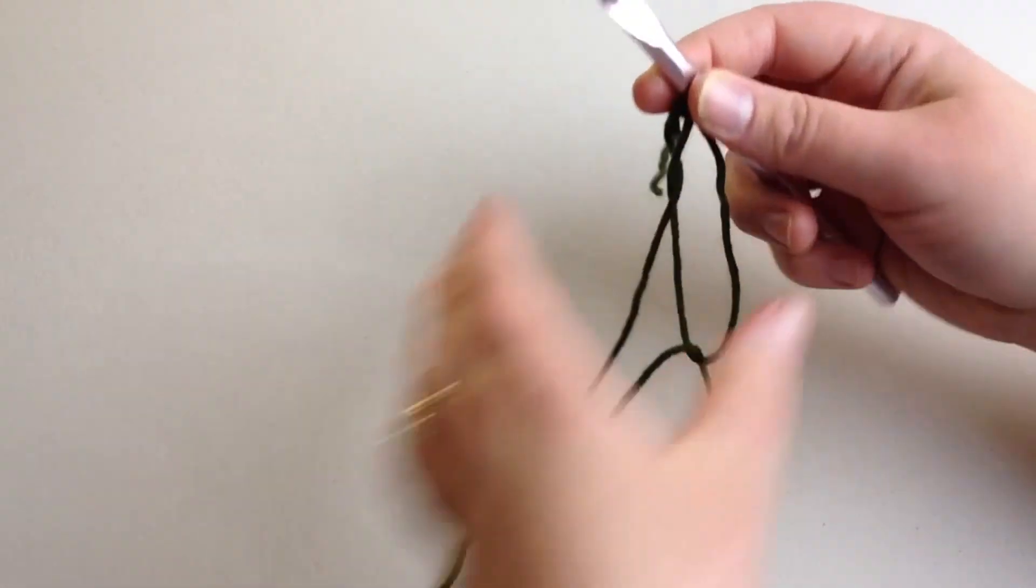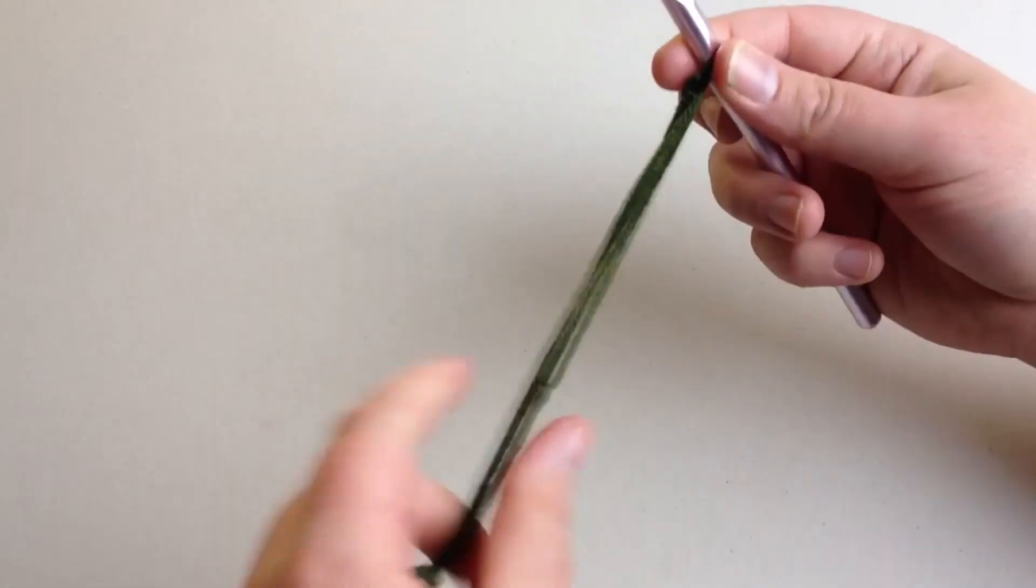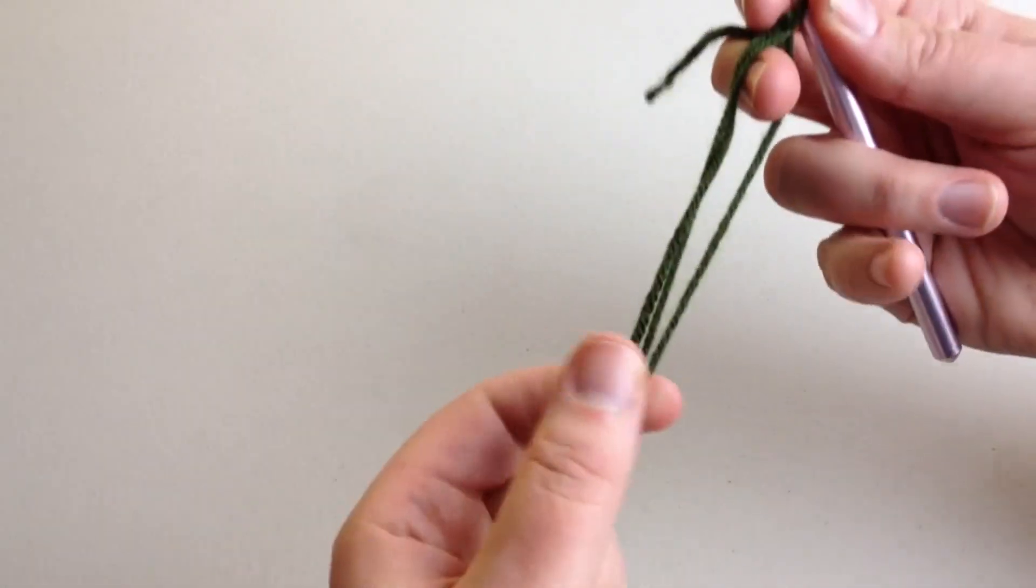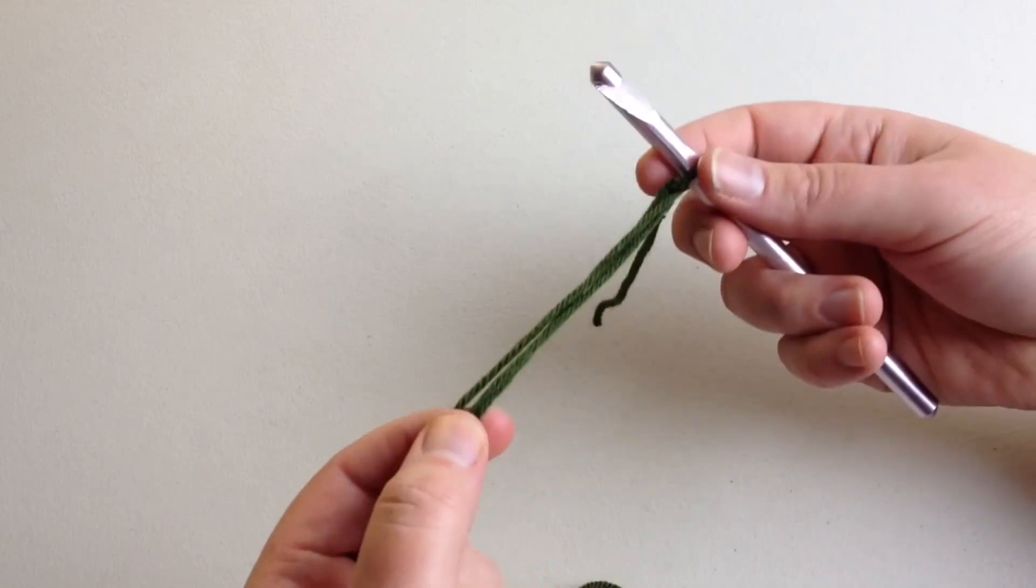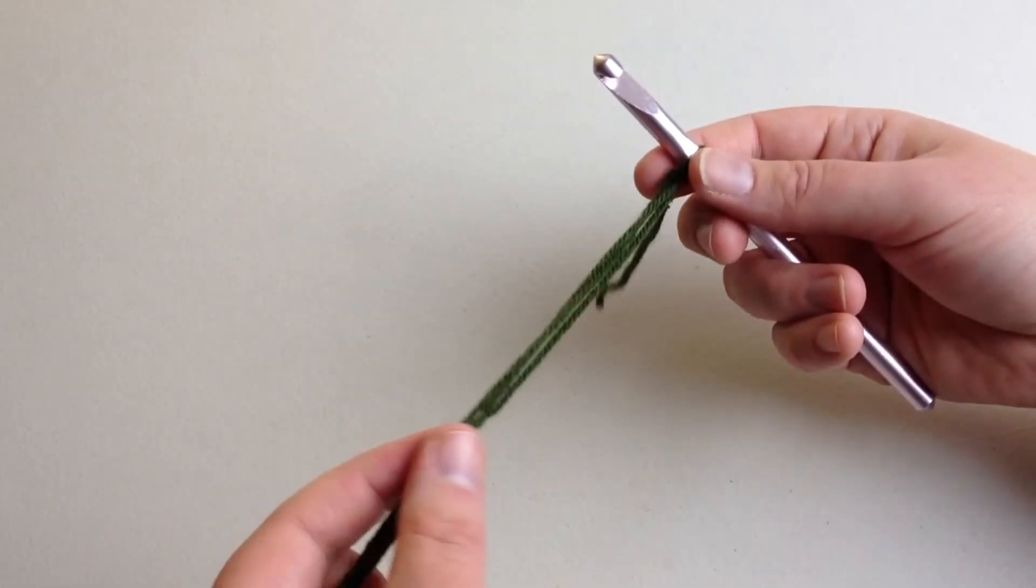As you do that, it will make this little bitty fold that holds these together. It's just a very slight bump, not as big as a knot, and it's really going to get hidden in your project.